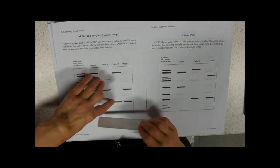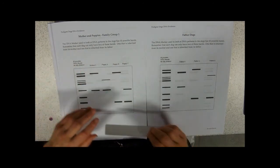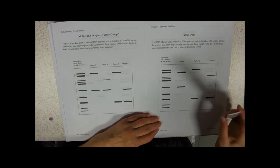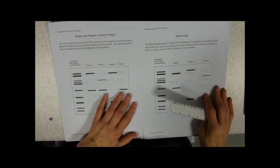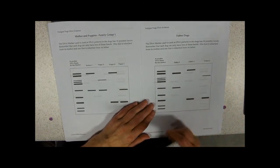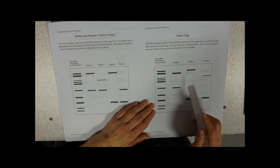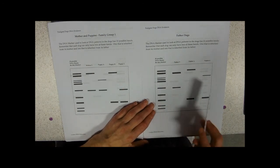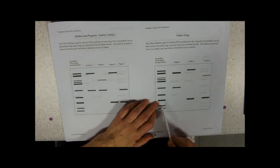This leaves us with these two fragments from the father, this thin band, this thicker band. So third from the top and third from the bottom. So if we look at the father dogs now to try and identify who's who, we're looking for a father who has got this third marker from the top and the third marker from the bottom.